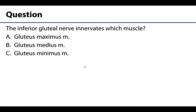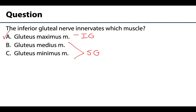Innervation is key here. We spent a lot of time on the superior gluteal nerve — but what does the inferior gluteal nerve innervate? Is it the maximus, medius, or minimus? Recall: the medius and minimus are innervated by the superior gluteal nerve, which is where the Trendelenburg sign comes in if you have injury to that nerve. The gluteus maximus has its own innervation — the inferior gluteal nerve — making the gluteus maximus the correct answer.